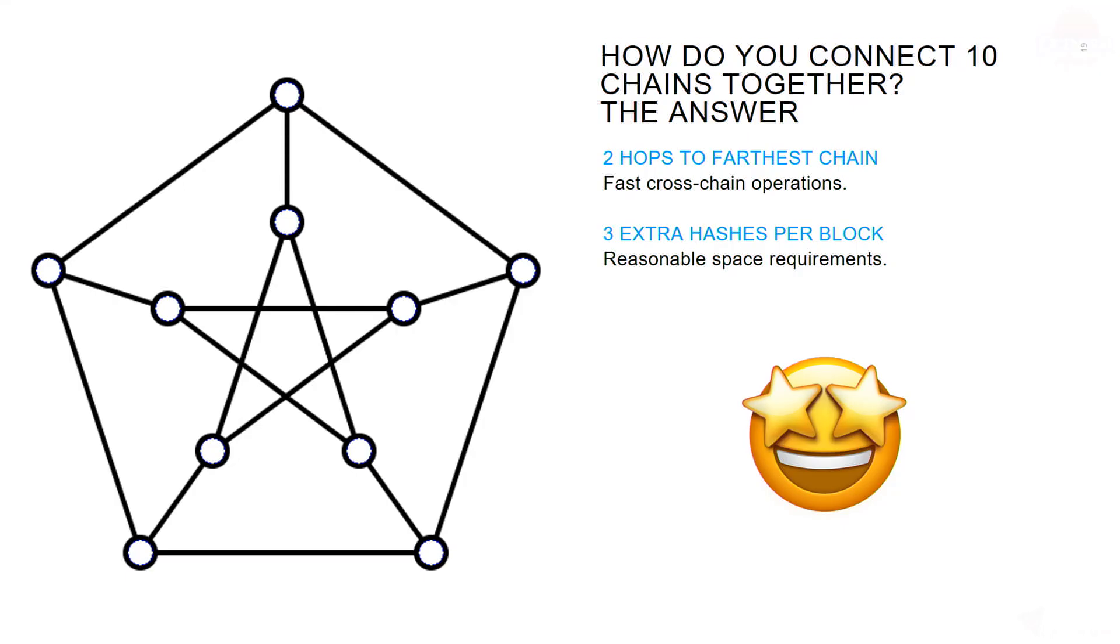Here is what it looks like to connect 10 chains together using a graph theory solution. This graph gives you two hops to the farthest chain. No two nodes are ever more than two hops away from each other. And it only requires three extra hashes per block. So this is a good solution, and when we launched our network, we started out with this 10 chain graph.